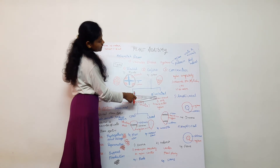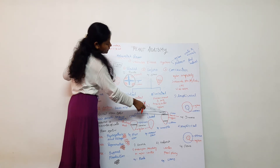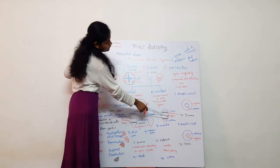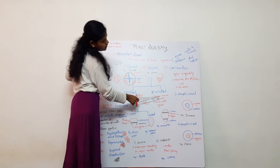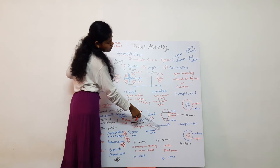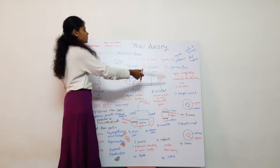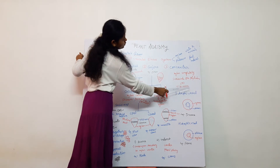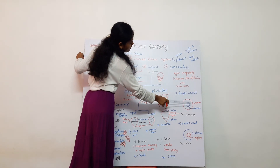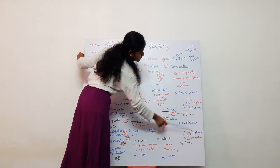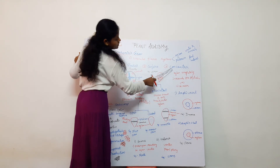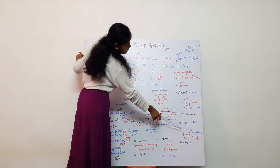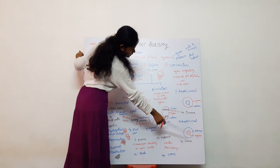Bicollateral vascular bundle means phloem is present on both the inner and outer sides of the xylem. Third, concentric: xylem completely surrounds the phloem or phloem completely surrounds the xylem. First type is amphivasal — example Resina. Second type is amphicribral — example ferns.